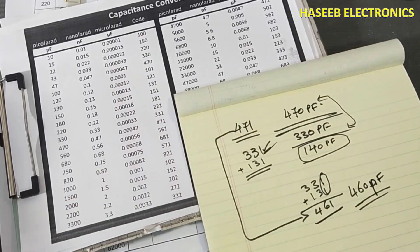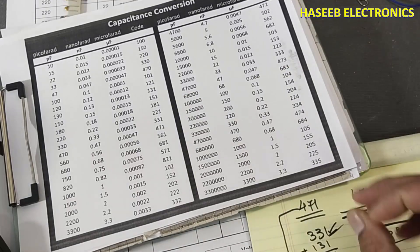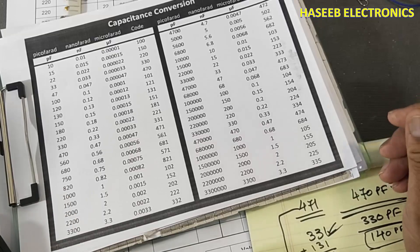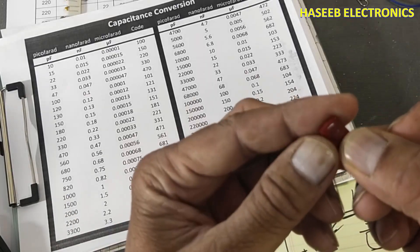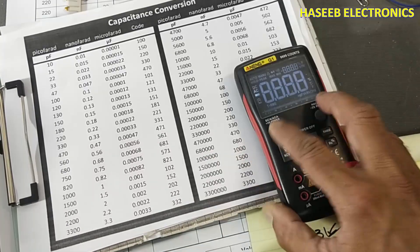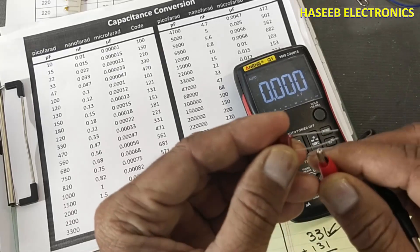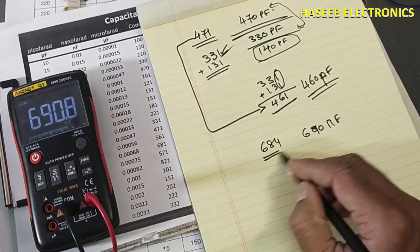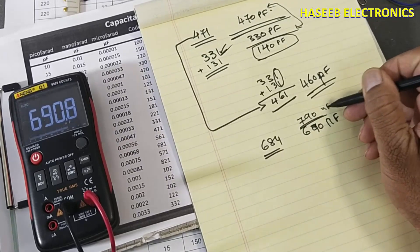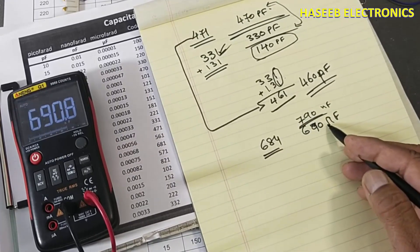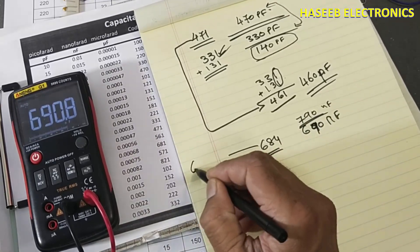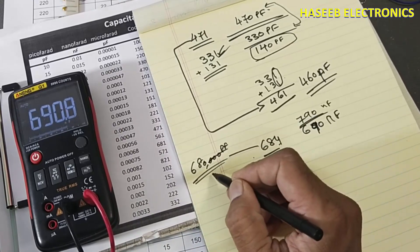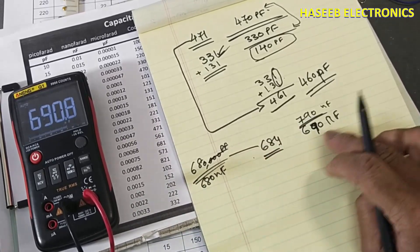Let me explain another example. Suppose while working on a circuit we need around 780–790 nanofarad and we don't have that capacitor. I have 684 code — that is 680,000pF or 680 nanofarad. The 684 code means: digits 6 and 8, then 4 zeros, giving 680,000pF. Removing three zeros gives 680 nanofarad.